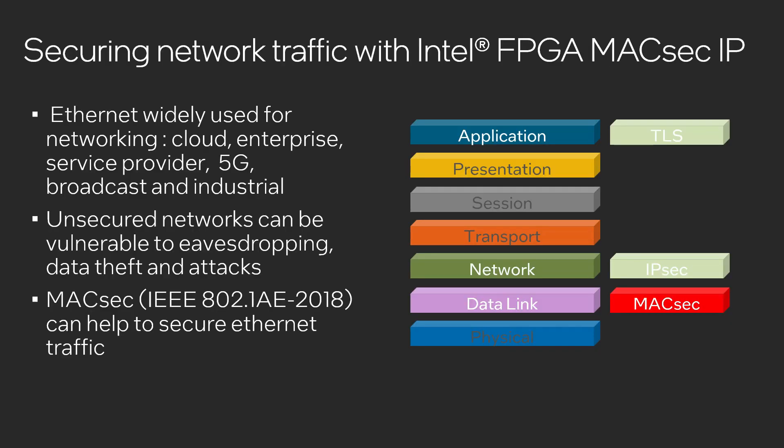Why should you be excited about the MACSEC IP? The MACSEC IP provides data confidentiality and integrity for the Ethernet protocol by adding a small overhead at the data link layer, enabling high speed and low latency security. MACSEC is commonly used for securing data between the cloud and data centers, in 5G networks, or for secure IoT devices on a LAN. The MACSEC IP is a highly parameterizable block and uses standard interfaces such as AXI-ST and AXI-Lite, which can connect to other Intel FPGA IPs.